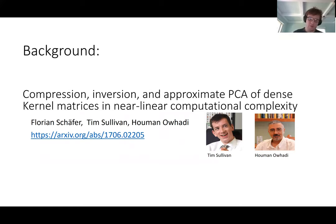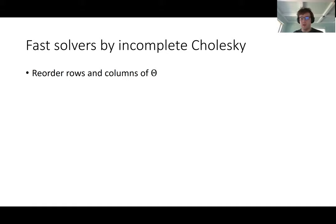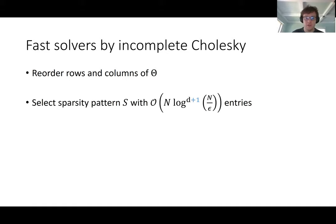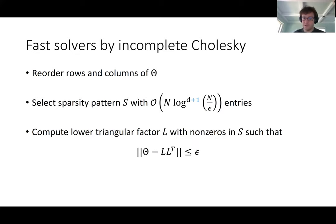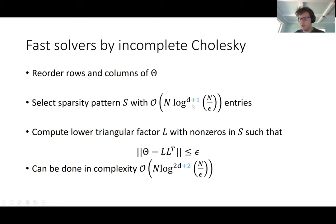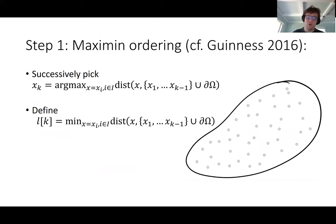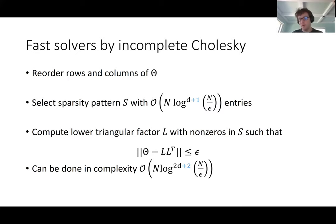I'll start with some background from earlier work with Tim Sullivan and Houman Owhadi, which is a precursor to this method. In that precursor, we were computing Cholesky factors of theta directly: reorder theta, select a sparsity pattern, and compute a lower triangular factor. Comparing to the new method, the earlier work had an additional logarithmic factor in space complexity and two logarithmic factors in time complexity. A logarithmic factor might sound small, but in practice this squared logarithmic factor can end up being on the order of 50 or 100 — something noticeable. I'll explain the ordering for the old algorithm and then develop the new version.